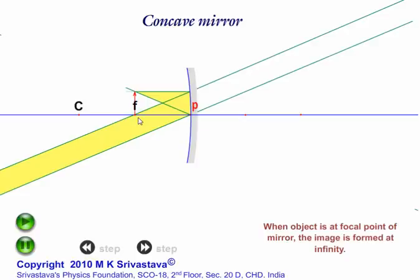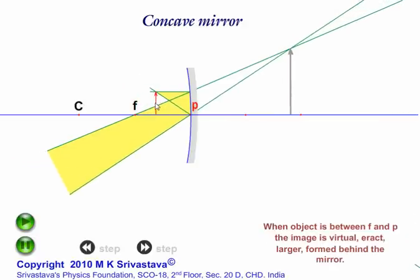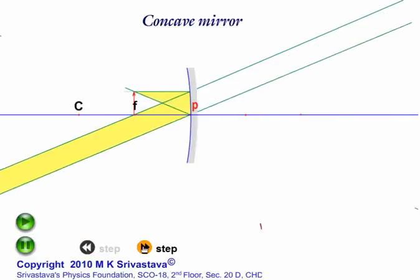When the object comes to the focal point of the mirror, the image is formed at infinity and the light rays become parallel. When the object comes near to the mirror so that it is between F and the pole, the image is virtual, erect, and larger than the size of the object.